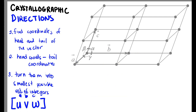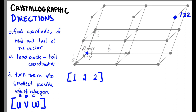For a final example of crystallographic directions, let's say we want to visualize what a direction looks like in our crystal — given the direction [1 2 2]. We just reverse what we did before. We take 1, 2, 2 as the coordinates of the head, and place the tail at 0, 0, 0. So we plot the point 1, 2, 2 — that is the head — and the tail is at 0, 0, 0.